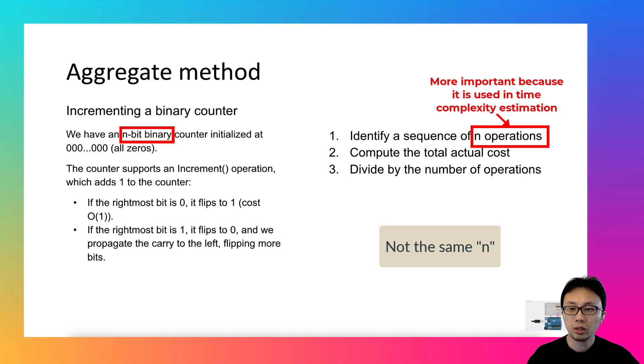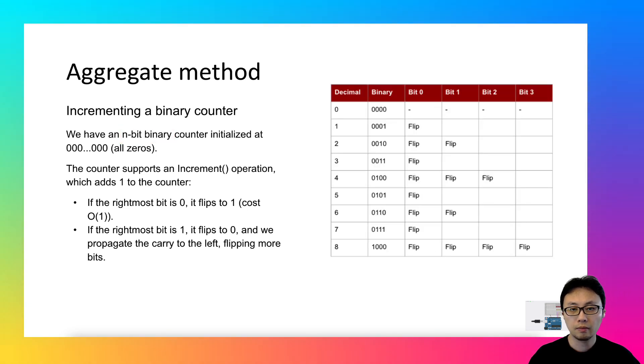If you think about the example we visited, the bit number can be 4, and the sequence number of the operations can be 8, like this. The second step is to add up all the costs of each operation. We will go with this example here.